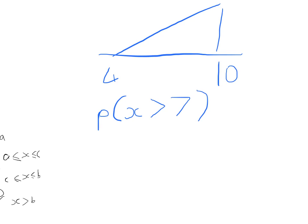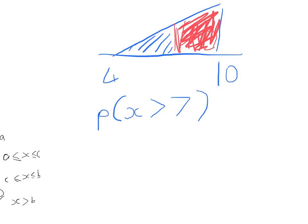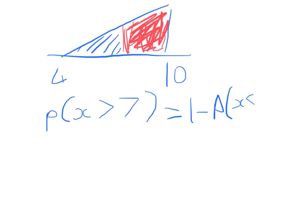We have a couple of options. We could find a trapezium between 7 and 10, or alternatively we can find the area below the line — the probability X is less than 7 — and subtract that from 1 to find the area above the line. We'll do it that way, so P(X > 7) = 1 − P(X < 7). Let's draw in 7 on our graph.